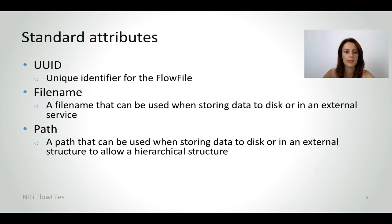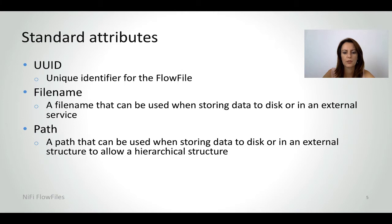There are some standard attributes that any flow file has. The UID is the unique identifier for the flow file. A filename and a path. The filename is an actual filename, in the sense that you know it, that can be used when storing data to disk or in an external service. And the path is a path for storing data, so that storing everything can be done in a hierarchical structure.